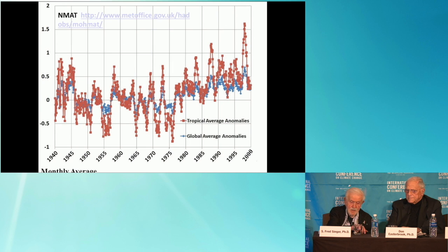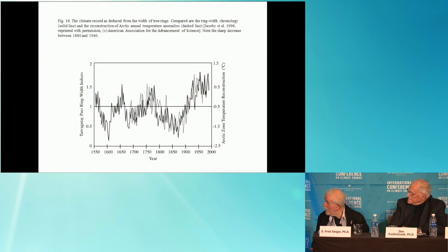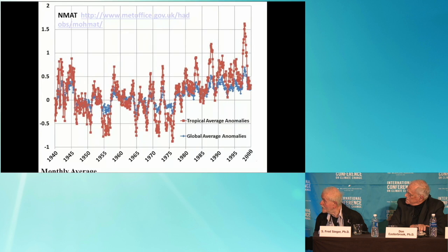The next slide shows the first proxy data that I saw in 1996. These are tree ring data. They show the first warming. You see it between roughly 1900 and 1940. And then no warming in the latter part of the 20th century.